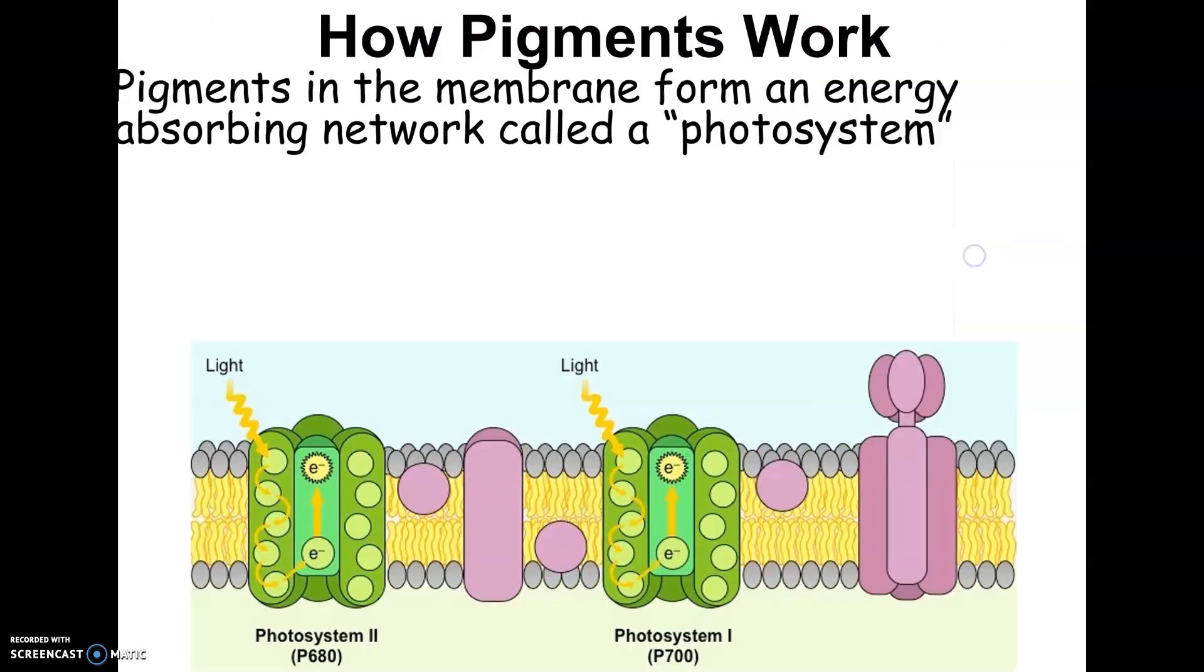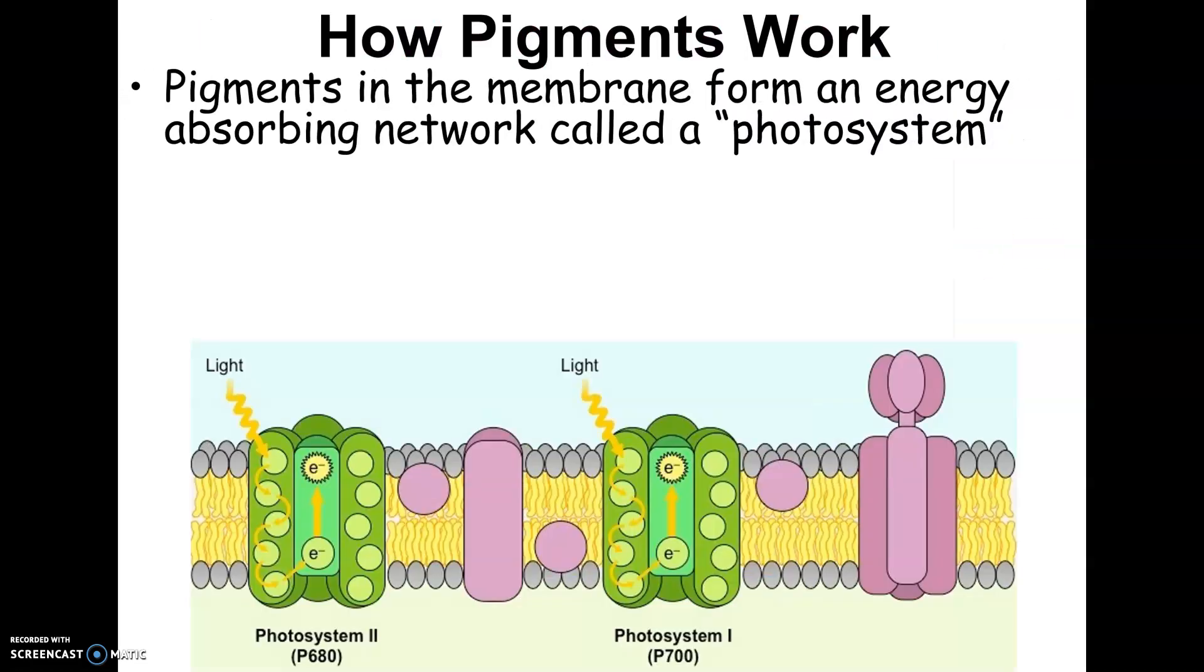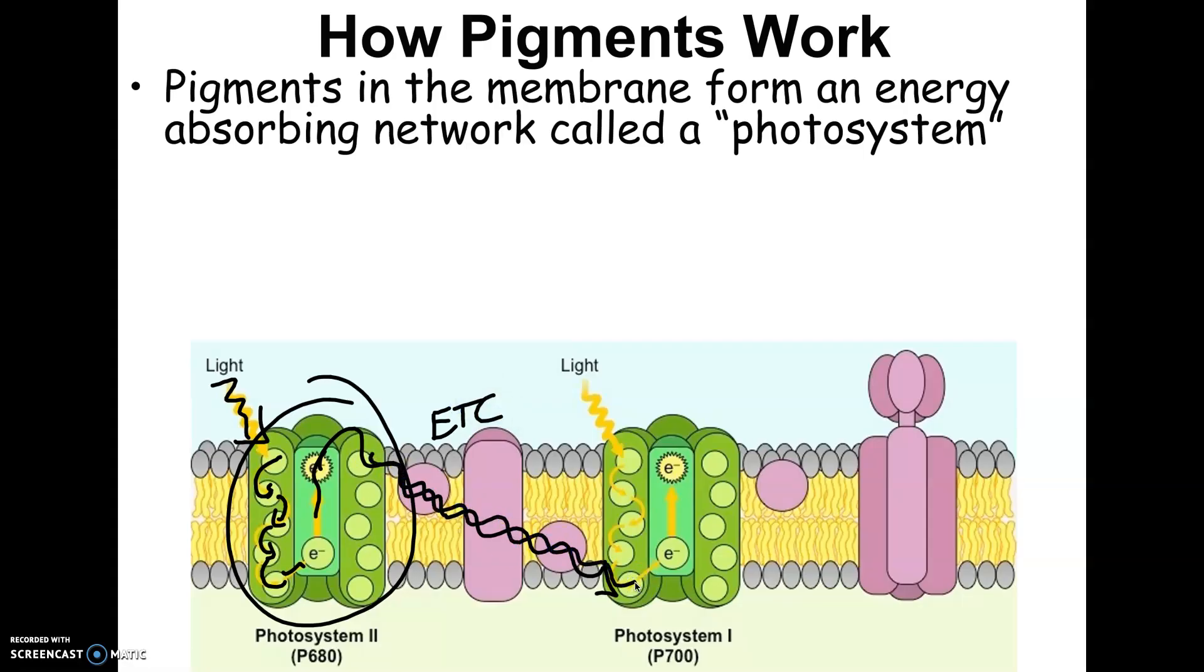So the way that pigments work is they are in these networks called photosystems. And this is a picture of what a photosystem would look like. When light hits a photosystem, the electrons in the photosystem get excited. And that's what they're showing here, that the electrons are sort of passing energy along. And what's eventually going to happen is an electron is going to get so excited, it's going to leave. And it's going to go down something called an electron transport chain. And when electrons travel down an electron transport chain, it generates energy.